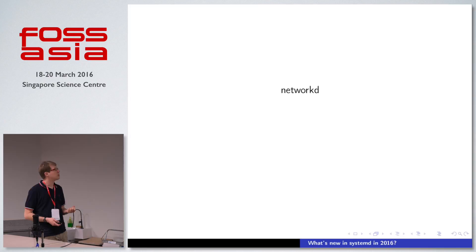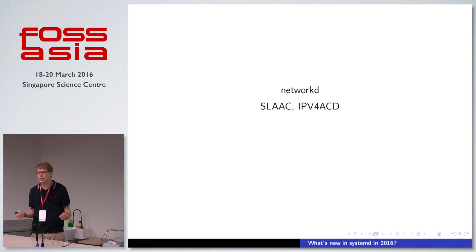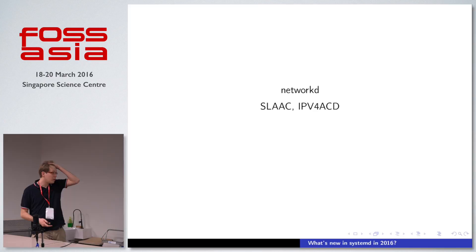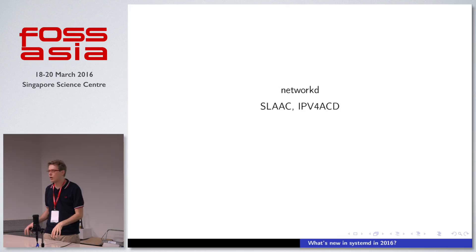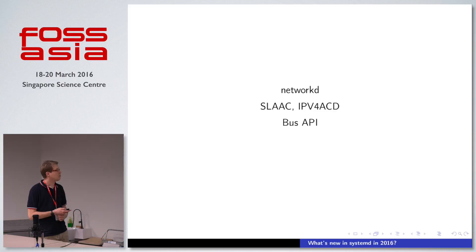I already talked about networkd, and we added a couple of things there too, like SLAAC and IPv4ACD — mostly IPv6 stuff. SLAAC is about assigning addresses. We have our own implementation of that now, which basically means networkd doesn't have any dependencies — it doesn't pull in external components to function in the most basic way; it just does it natively. It also does IPv4ACD, which is address conflict detection — automatic detection if two hosts on the same network use the same IP address. Linux never had that built in, and we added it to networkd, which is really interesting information to have if you've misconfigured your network.